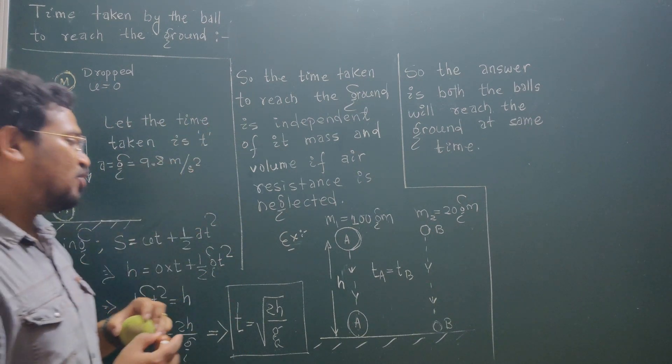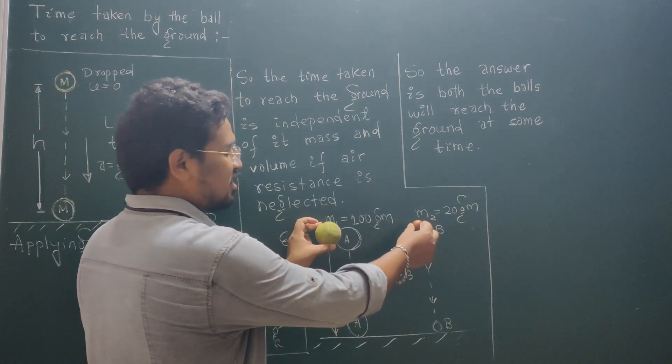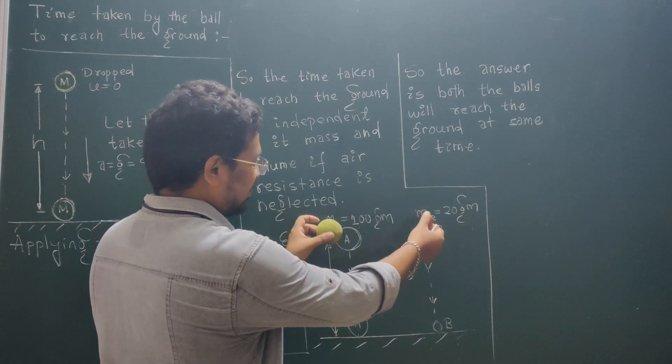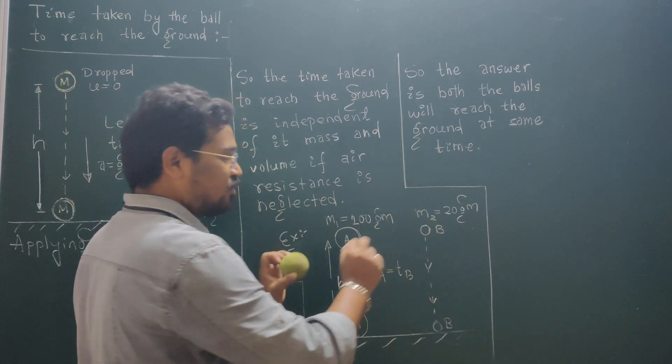Now let's take an example. If we have two balls, A and B, one is of mass 100 grams and another is of mass 10 grams. If we release them from the same height, the time taken by them will be equal.